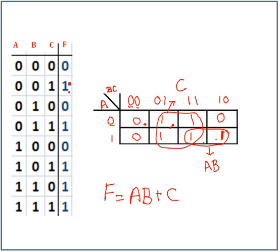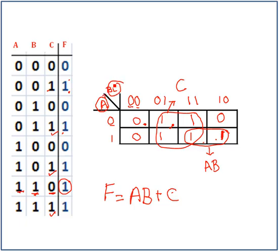So the equation for F is A·B or C. Let's look at the truth table and verify. Where C is one — that makes sense. Where C is one again — that makes sense. C is one, C is one. How about the remaining cell? C is zero, but A and B are both one — so that's a one. This expression satisfies the truth table. Now, I placed A on one side and B and C on the other. There is no real rule as to where A, B, or C needs to go.